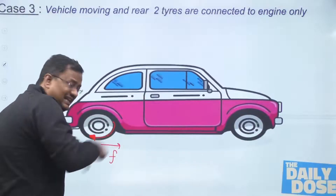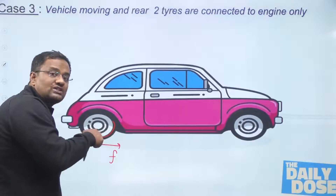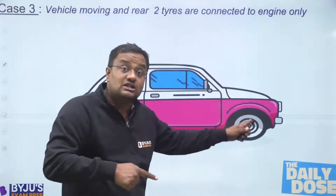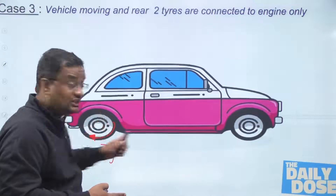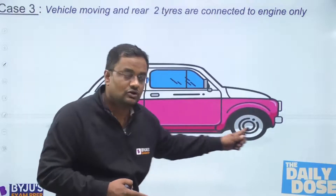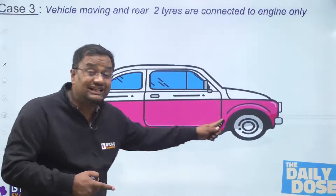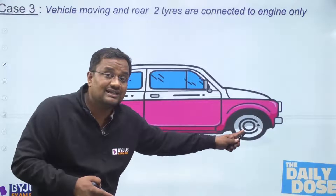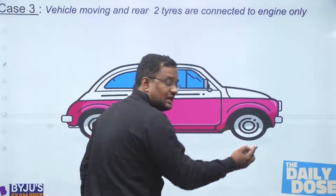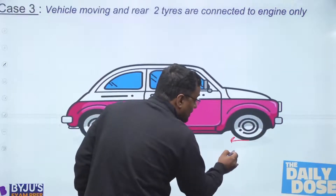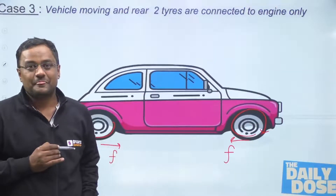Since only the engine is connected to the rear wheels, the rear rotation causes the vehicle to move forward, which in turn creates a tendency for the front wheel to move forward. There is no engine connected to the front wheel — the rear wheel's rotation is causing the front tire to move, creating a tendency of skidding. When there is a tendency of skidding, friction acts backward on the front tire, and this backward friction causes it to rotate.